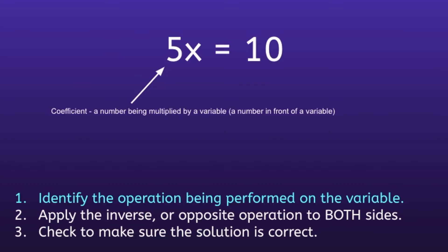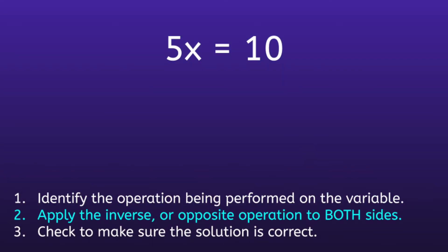Since 5 is being multiplied by x, we want to do the opposite of multiplying by 5. What is the opposite of multiplying by 5? If you said dividing by 5, you are correct. That brings us to Step 2: apply the inverse or opposite operation to both sides.